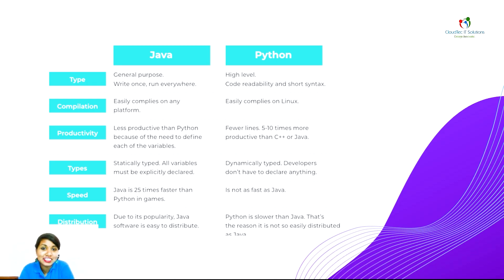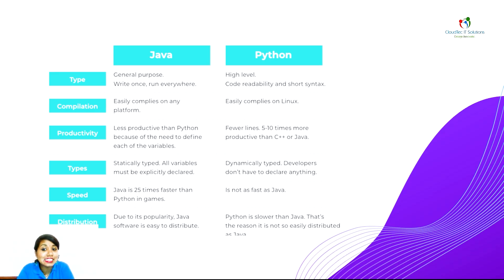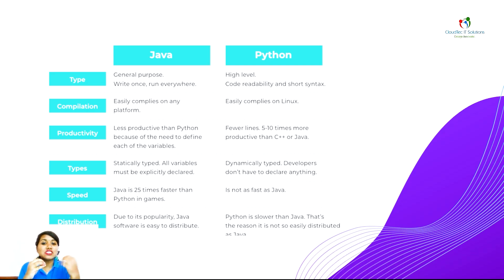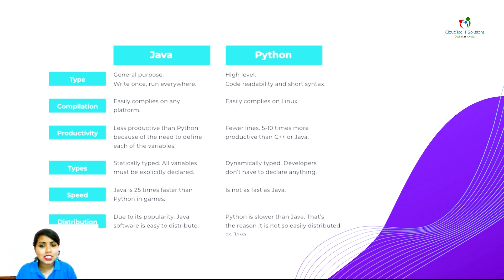Now the comparison between two leading programming giants — Java and Python. When you compare by type, Python is general purpose and Java is high level. In Java, you write once and run everywhere. Code readability and short syntax are highlights of Python. Python compiles easily on any platform. For productivity, Java is less productive than Python because you need to define each variable every time. Python has fewer lines and is ten times more productive than C++ or Java.